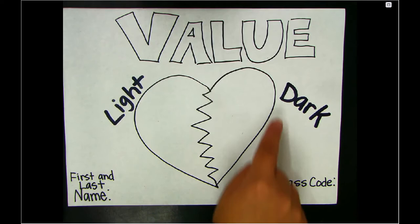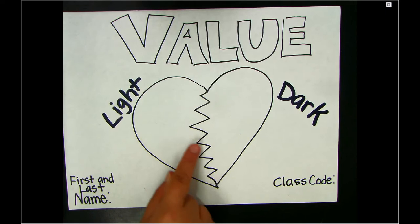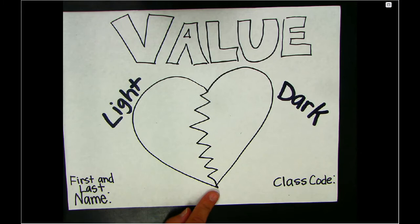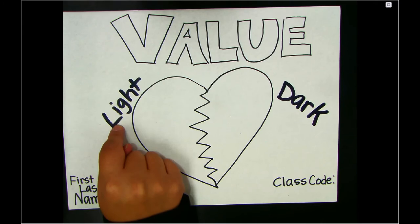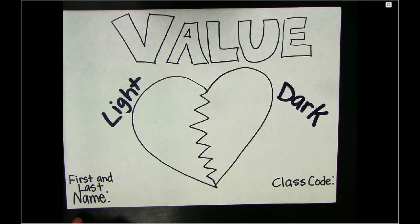After you've drawn your shape — for instance I drew my heart — I want you to take a line and separate the two sides. For this one I used a zigzag line. After you've drawn 'value' at the top, your shape with your line, I want you to write 'light' on one side and 'dark' on the other side.